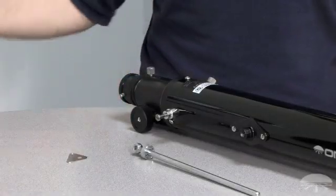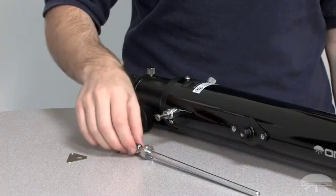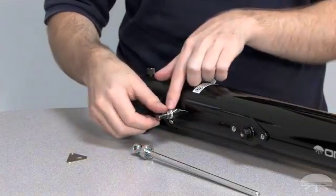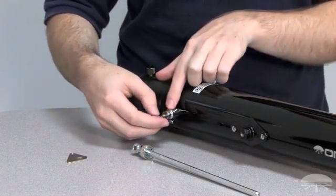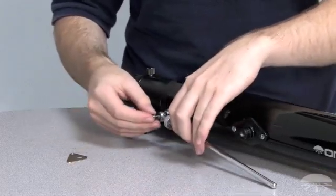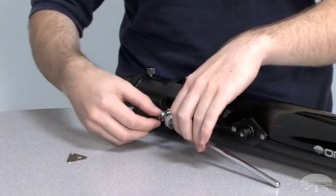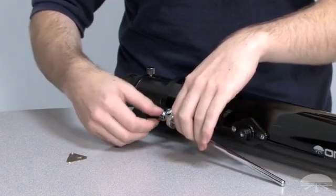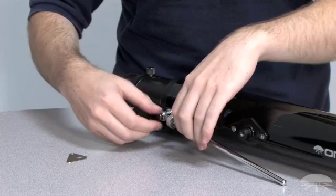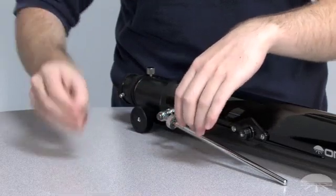The next step is to attach the altitude micromotion rod. Simply unscrew the screw in the attachment post, place it through the hole in the micromotion rod, and re-screw it into the attachment post. Tighten it down with the included screwdriver.